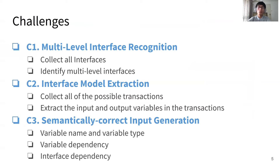After analysis, we summarize the following three challenges when fuzzing Android native system services. Challenge 1: In addition to the top-level interfaces registered in the service manager, there are nested multi-level interfaces. So we should collect all of the interfaces and recognize multi-level interfaces.